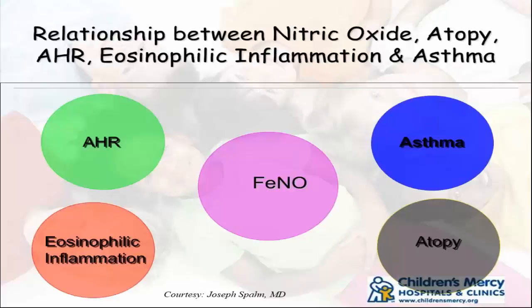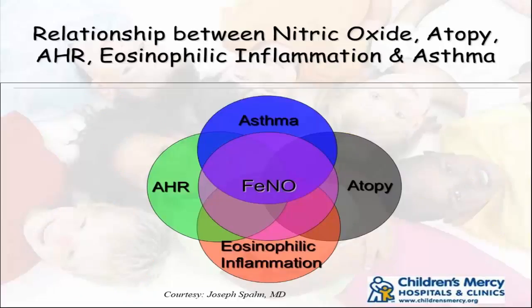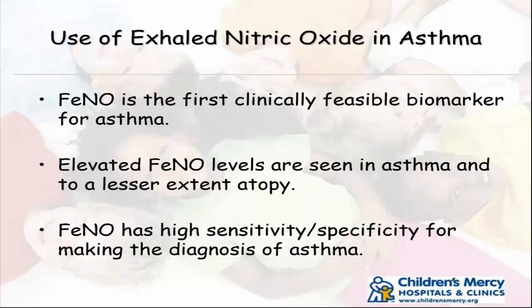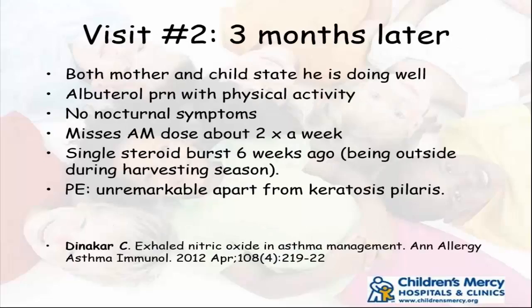ENO correlates with eosinophilic airway inflammation and TH2 airway inflammation based on multiple studies including bronchial biopsies and BAL. It can be used for identification of eosinophilic inflammation. The numbers to remember are 35 in children and 50 in adults. If it's less than 20, don't think of eosinophilic inflammation as one of your top diagnoses. ENO is the first clinically feasible biomarker for asthma. Elevated levels are seen in asthma and also in rhinitis, but ENO has good sensitivity specifically for making a diagnosis of asthma, though it is not the gold standard.